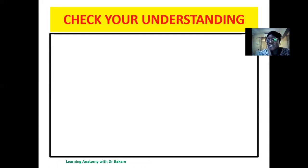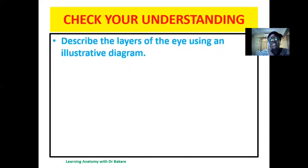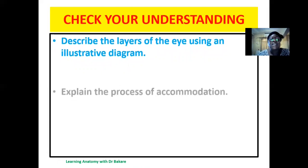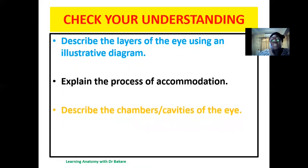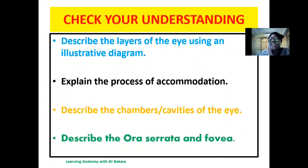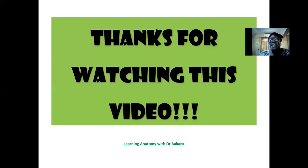Let's check our understanding through the following questions: Describe the layers of the eye using an illustrative diagram. Explain the process of accommodation and how it occurs. Describe the chambers and cavities of the eye. Describe the ora serrata and the fovea. Thanks for watching — stay tuned for more updates.